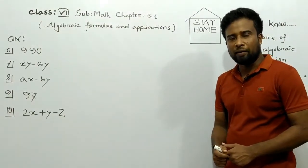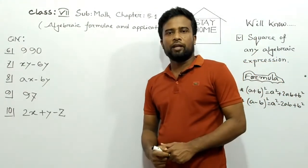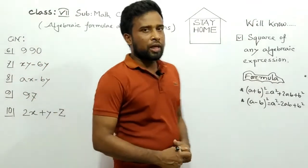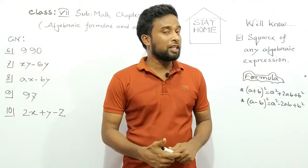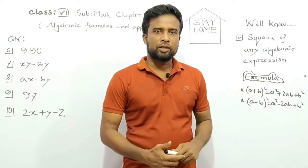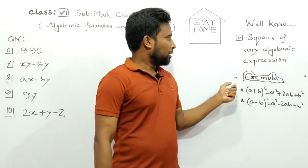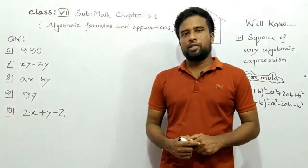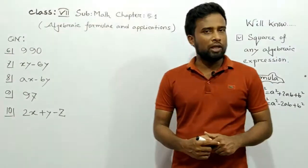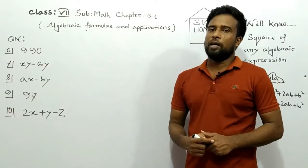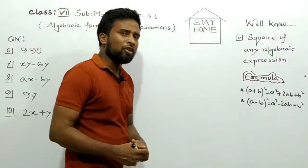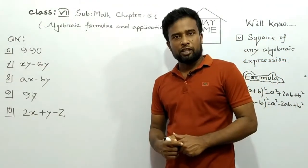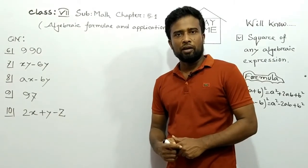Today we are in Class 7, Chapter 5.1, which is algebraic formula and applications. I will discuss how you can find the square of any algebraic expression using an appropriate formula. The two formulas are: (a + b)² = a² + 2ab + b², and (a - b)² = a² - 2ab + b².